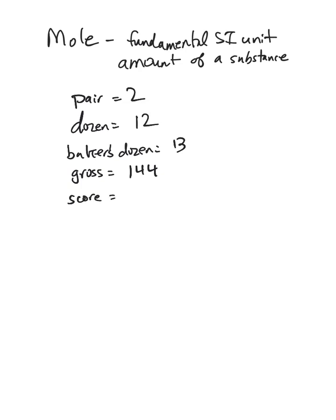Some of you may have heard of a score. A score is 20. Four score and seven years ago, our forefathers brought forth upon this continent, a new nation. That's what Abraham Lincoln said in his Gettysburg Address.